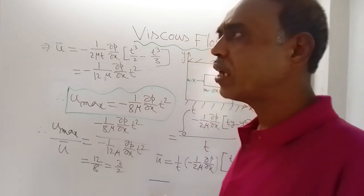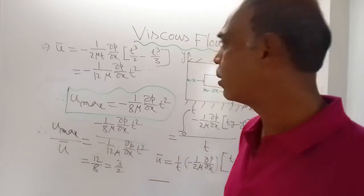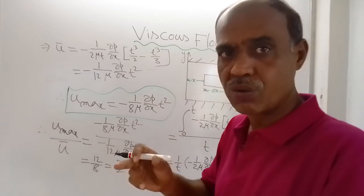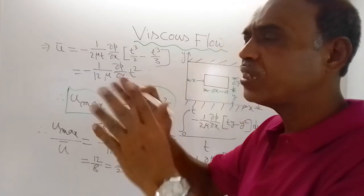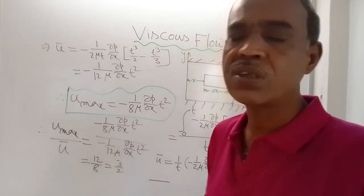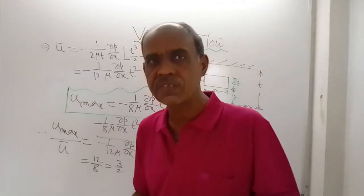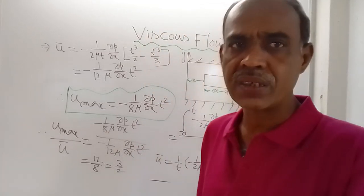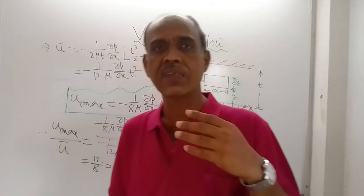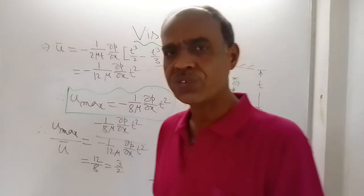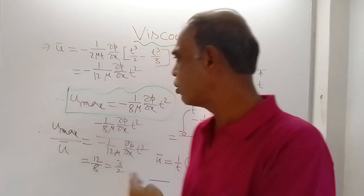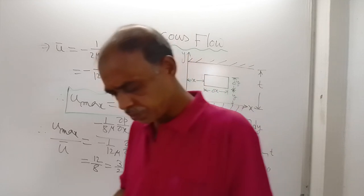Since the velocity distribution is known and the expression for U is known, we can easily find the shear stress distribution. According to Newton's law of viscosity, shear stress τ = μ · du/dy. Since U is known, differentiate the expression for U with respect to y to get the shear stress expression. I will show that in the next video. Thank you for watching. Have a nice day.